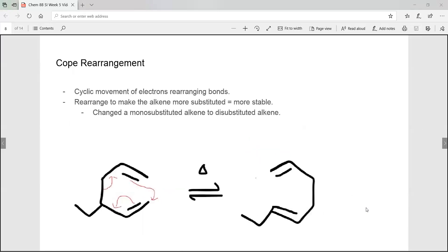Cope rearrangement is a cyclic movement of electrons rearranging bonds to make the alkene more substituted. So here's an example. We move the bonds around to make this alkene more substituted from mono-substituted to di-substituted.